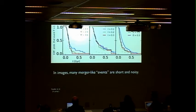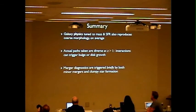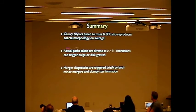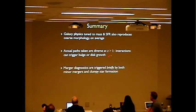So to end: it appears that galaxy physics tuned to mass and star formation rate over cosmic time also reproduces the coarse morphology on kiloparsec scales on average. The actual paths taken are diverse at redshift greater than one. Interactions can trigger bulge or disc growth — probably both. Merger diagnostics are triggered briefly by both minor mergers and clumpy star formation. Thank you.